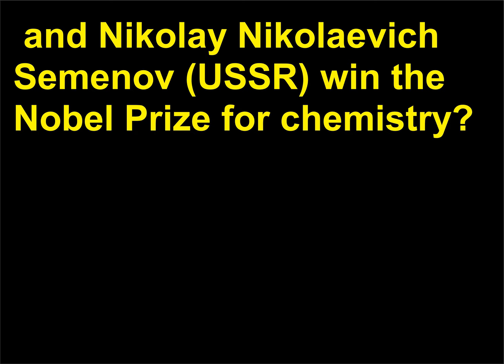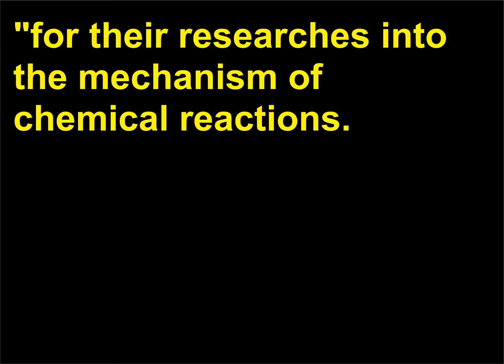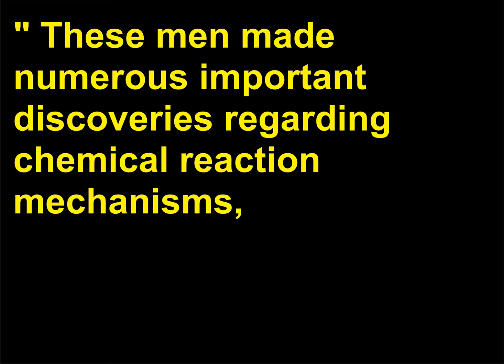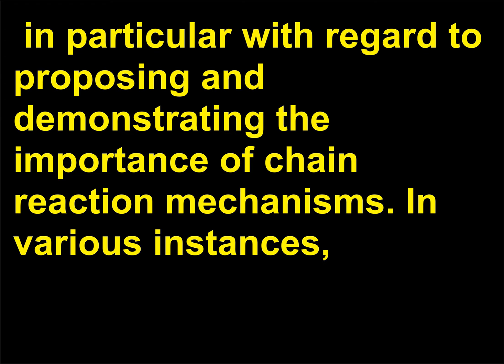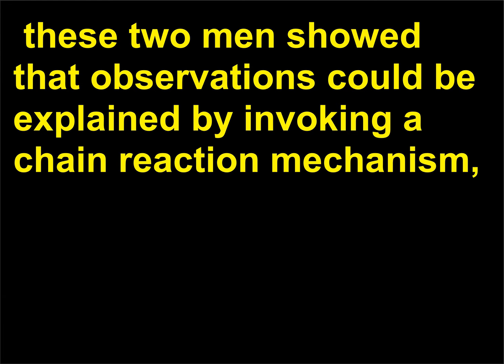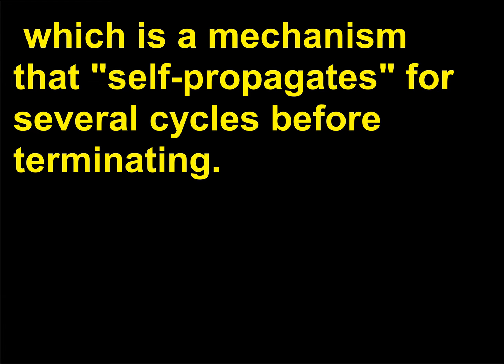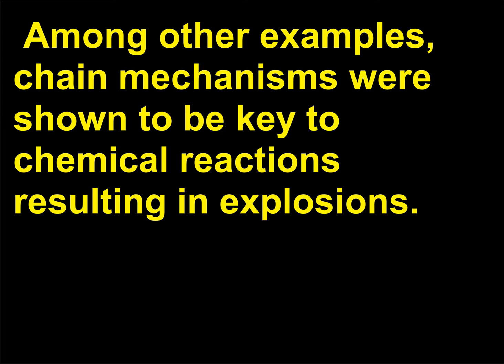Why did Sir Cyril Norman Hinshelwood, United Kingdom, and Nikolay Semenov, USSR, win the Nobel Prize for Chemistry? For their researches into the mechanism of chemical reactions. These men made numerous important discoveries regarding chemical reaction mechanisms, in particular with regard to proposing and demonstrating the importance of chain reaction mechanisms in various instances. These two men showed that observations could be explained by invoking a chain reaction mechanism, which is a mechanism that self-propagates for several cycles before terminating. Among other examples, chain mechanisms were shown to be key to chemical reactions resulting in explosions.